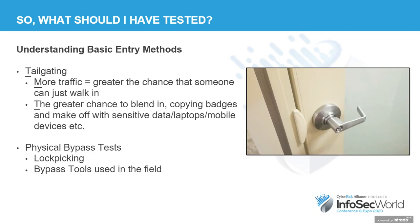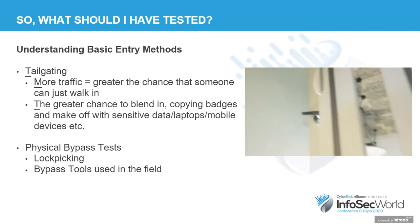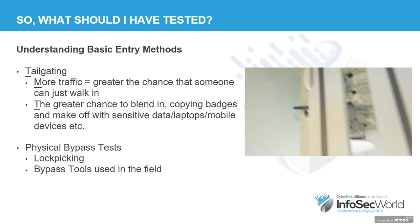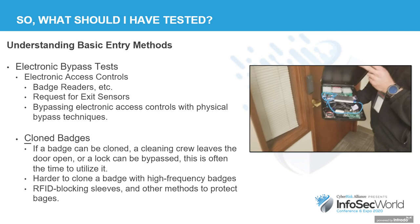We've talked about basic entry methods throughout: latch slipping, cloning credentials, and there's a video here of me popping a latch open very quickly with my favorite tool — a piece of plastic, basically an upgraded credit card attack. We've talked about tailgating: the more people there are, the easier it is to blend in. For electronic bypass testing, we use a clipboard with a few different antennas, a Proxmark, and an Arduino with a wireless USB to scan and clone badges. Also important: it is harder to clone high-frequency badges, so look at the kind of badges you use. Are you using RFID-blocking sleeves to prevent someone from bumping into you and cloning your badge? More details are available on wehackpeople.com.